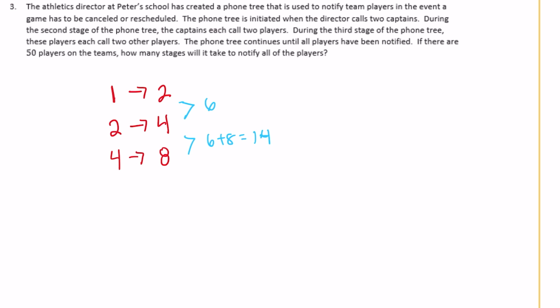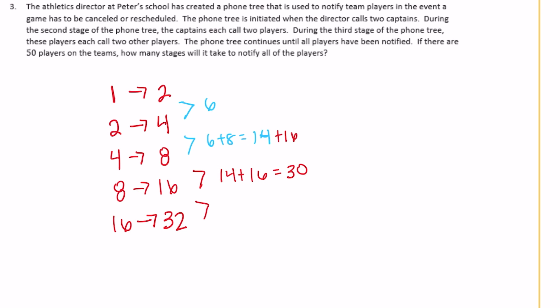After those 8 people, 16 more are called, bringing the total to 30. Then those 16 people each call two, reaching 32 more people: 30 plus 32 equals 62 people, which exceeds the 50-person team. So it took one, two, three, four, five stages of the phone tree to reach all the players.